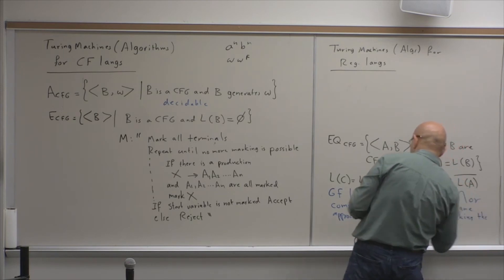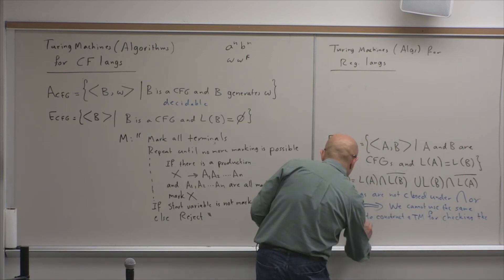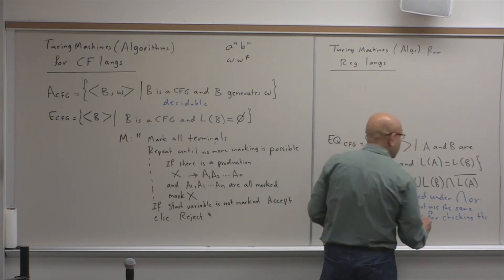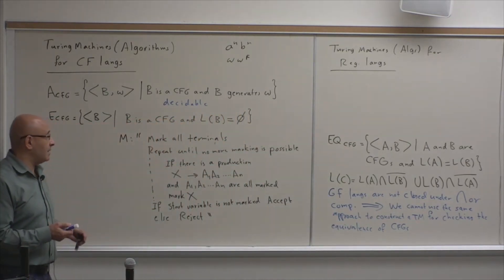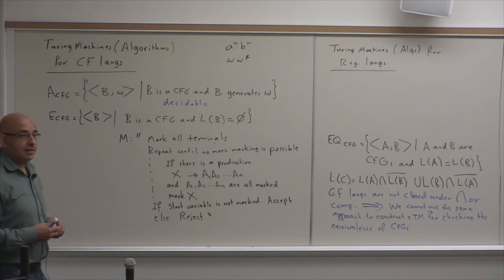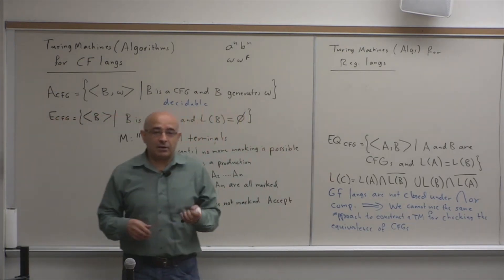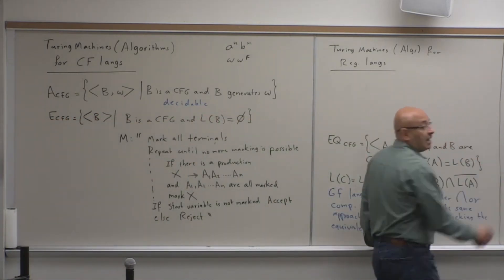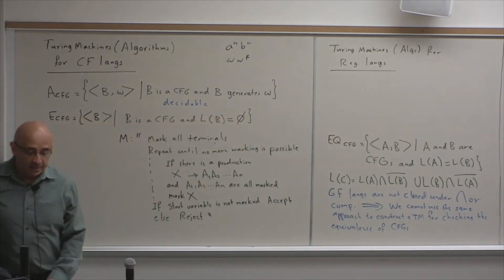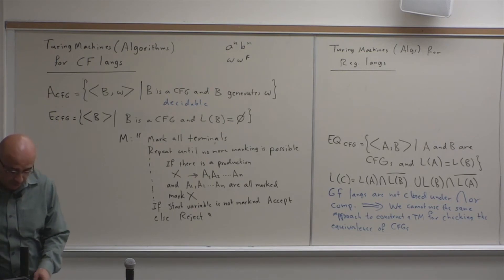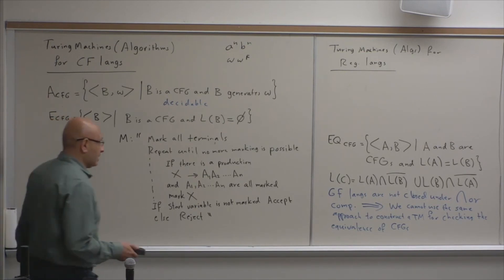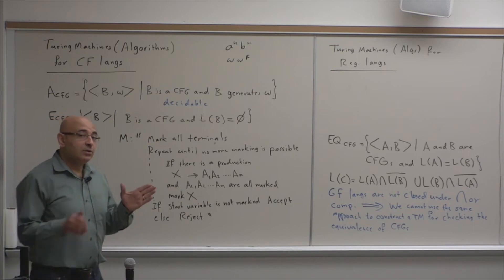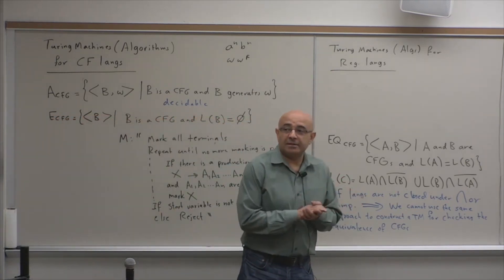This approach fails for checking equivalence of context-free grammars. But does this prove there is no algorithm? Of course not — there may be other approaches. But in fact, such an algorithm does not exist. There is no algorithm that will take two context-free grammars and determine if they are equivalent.